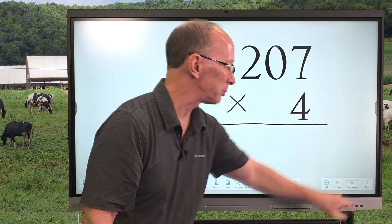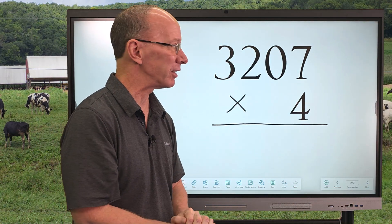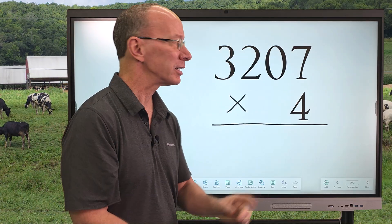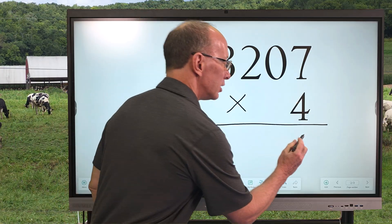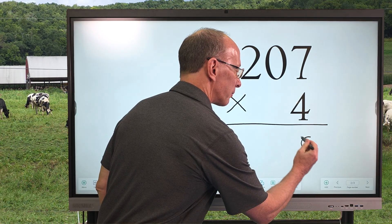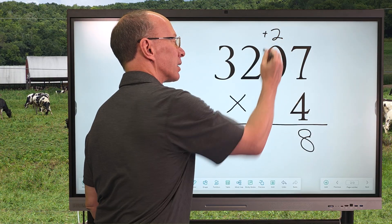Alright, let's go on to the next problem here. We have 3,207 times 4. So, let's go ahead and multiply 7 times 4 equals 28. So, I put the 8 right here and I put the 2 up here.